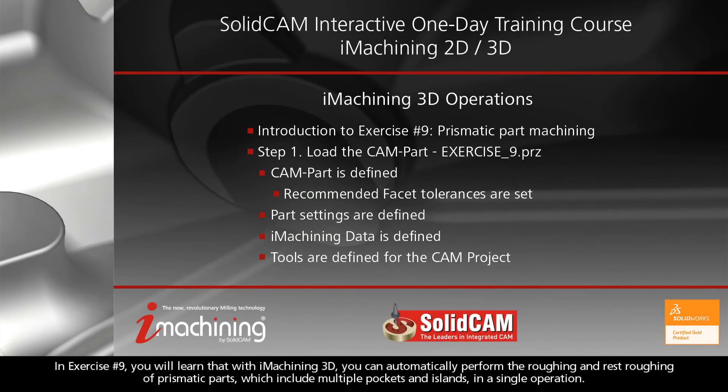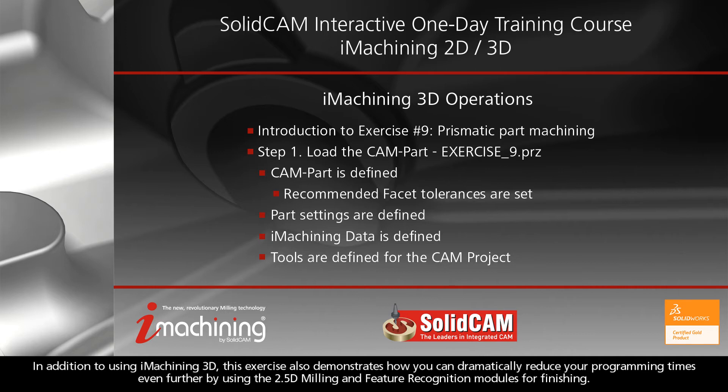In exercise number 9, you will learn that with iMachining 3D, you can automatically perform the roughing and rest roughing of prismatic parts, which include multiple pockets and islands, in a single operation. In addition to using iMachining 3D, this exercise also demonstrates how you can dramatically reduce your programming times even further by using the 2.5D milling and feature recognition modules for finishing.